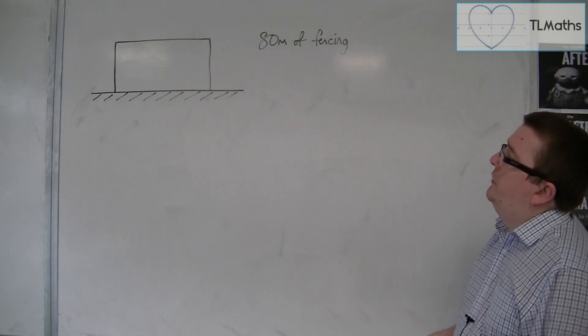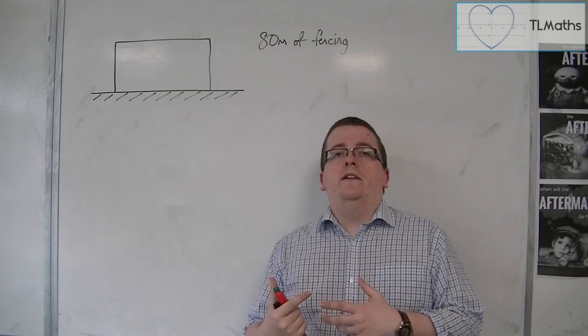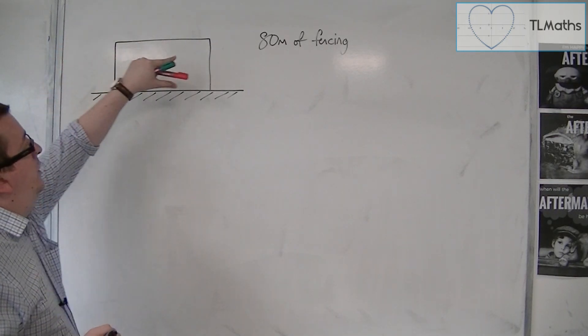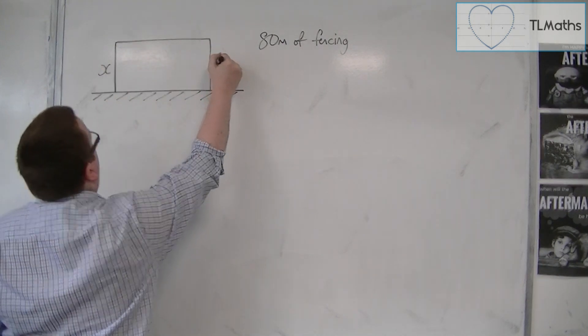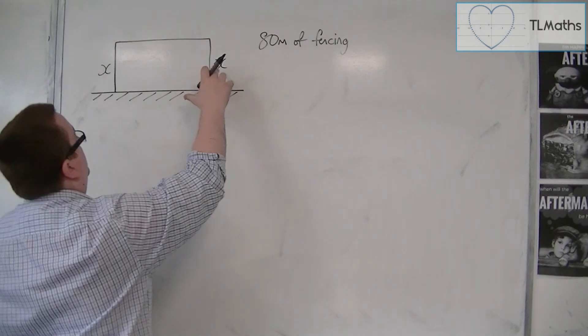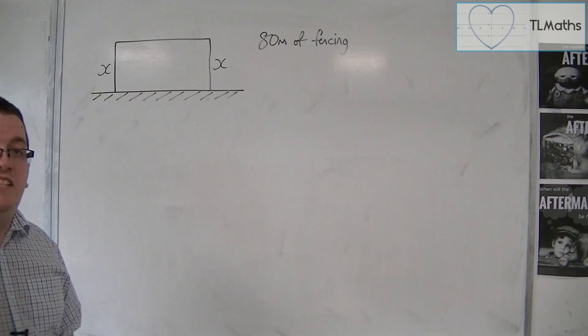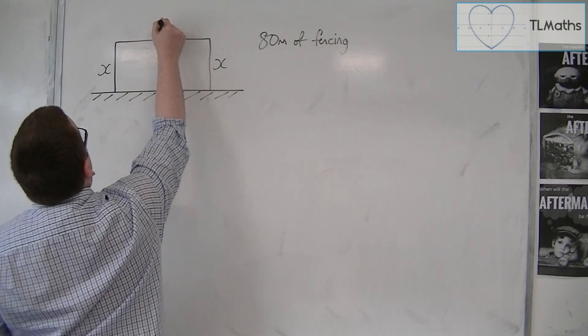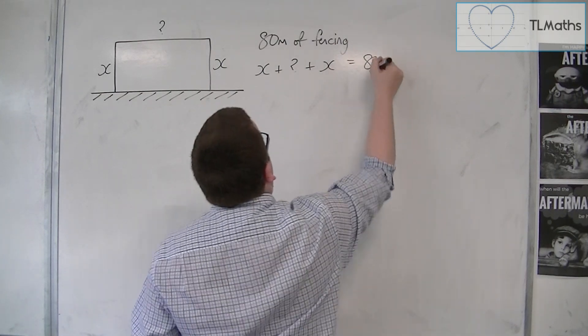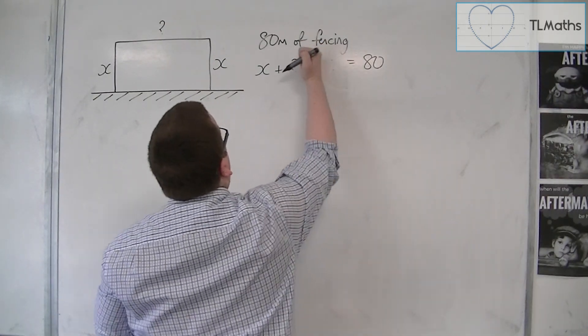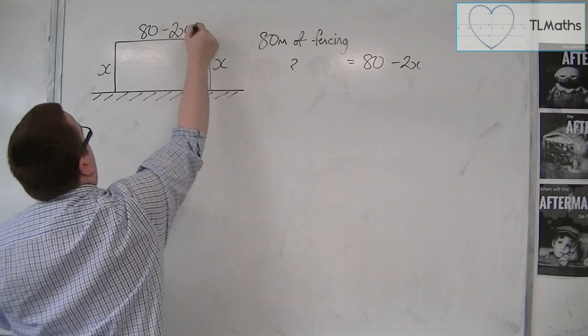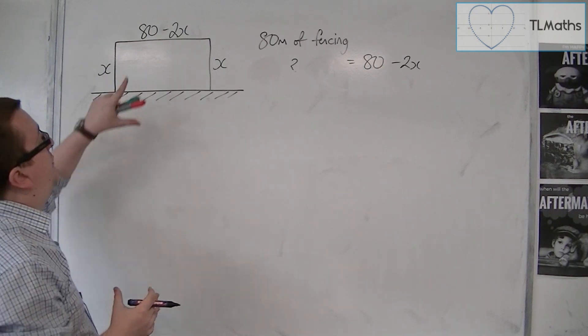So if I've got 80 meters of fencing, I need to set this problem up in such a way that I can introduce some algebra into it. One thing that we don't know is the width of this rectangle. So let's call that x. If we call that x, then that leaves us with this length here. Now we know that the total length of this side, this side, and this side must add up to 80 meters. So effectively, if I put that as a question mark for the moment, then x plus that side I don't know, plus x, must all add up to 80 meters.